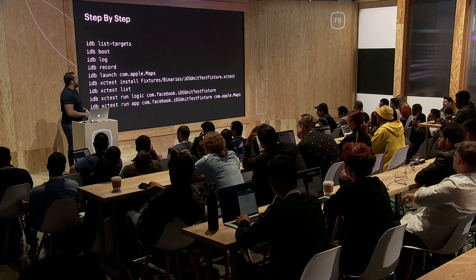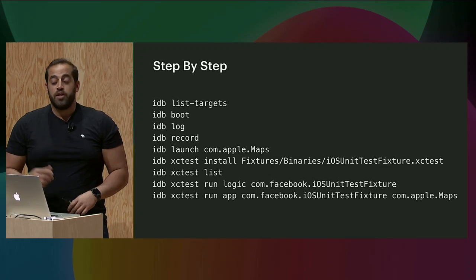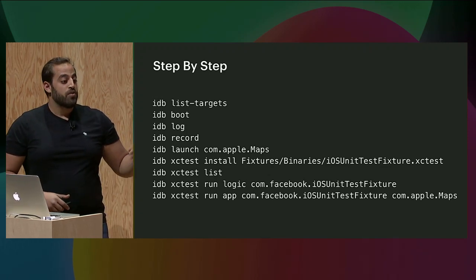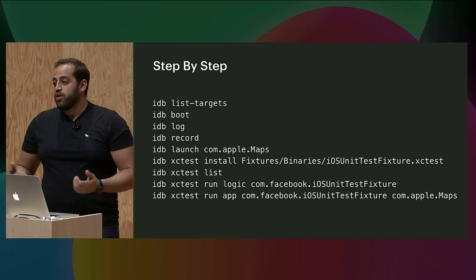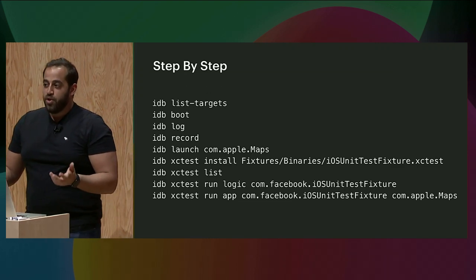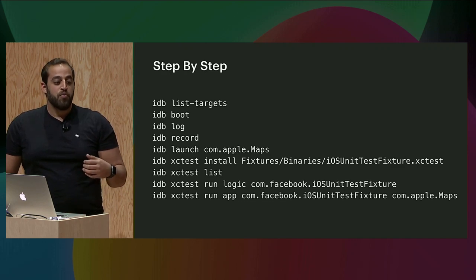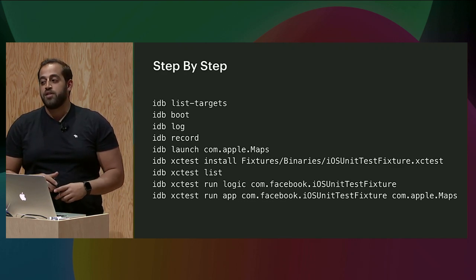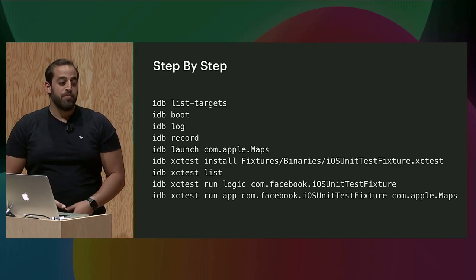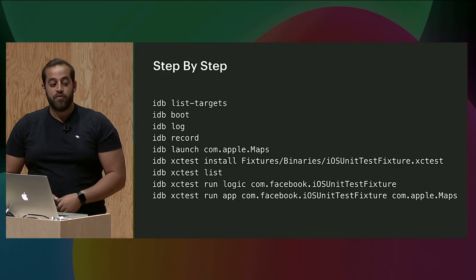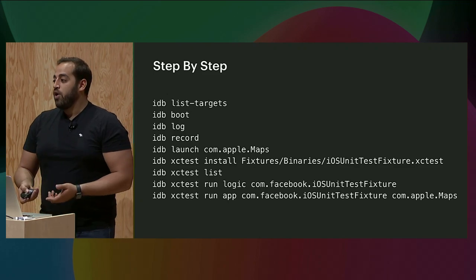Here are some of the instructions we're going to use today. The CLI is very easy — IDB list targets shows you the targets on your system, IDB boot boots a simulator, IDB log shows you the logs. We worked hard to make the CLI self-documenting. IDB launch launches an app, stuff like that. Let's switch to a demo and see all of this in action.